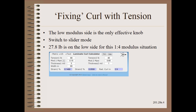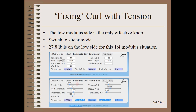To make this easier, we will first switch to slider mode by unchecking the text box in the upper left. Then we will slide the PE tension down until the radius goes large, changes sign,